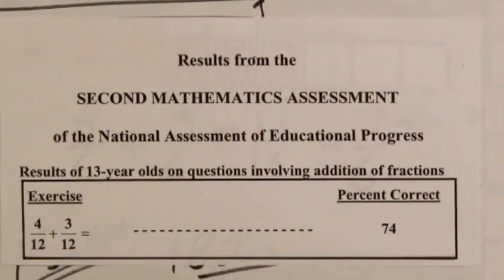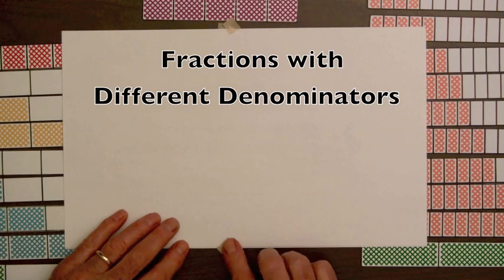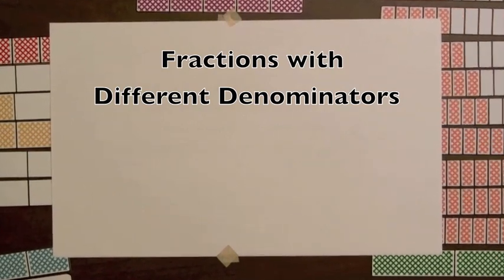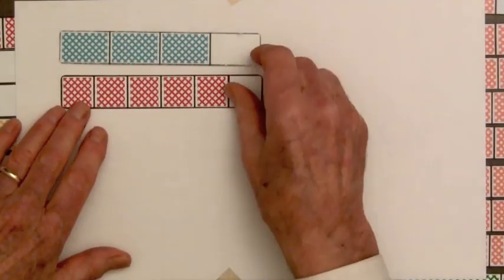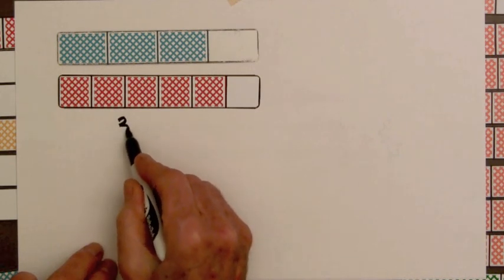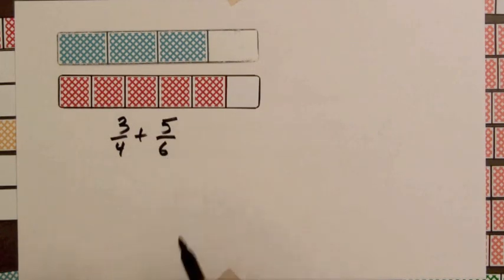Let's look at another example involving fractions with different denominators. Suppose the road crew paves 3/4 of a mile on one day, that will be represented by this bar, and 5/6 of a mile the second day.